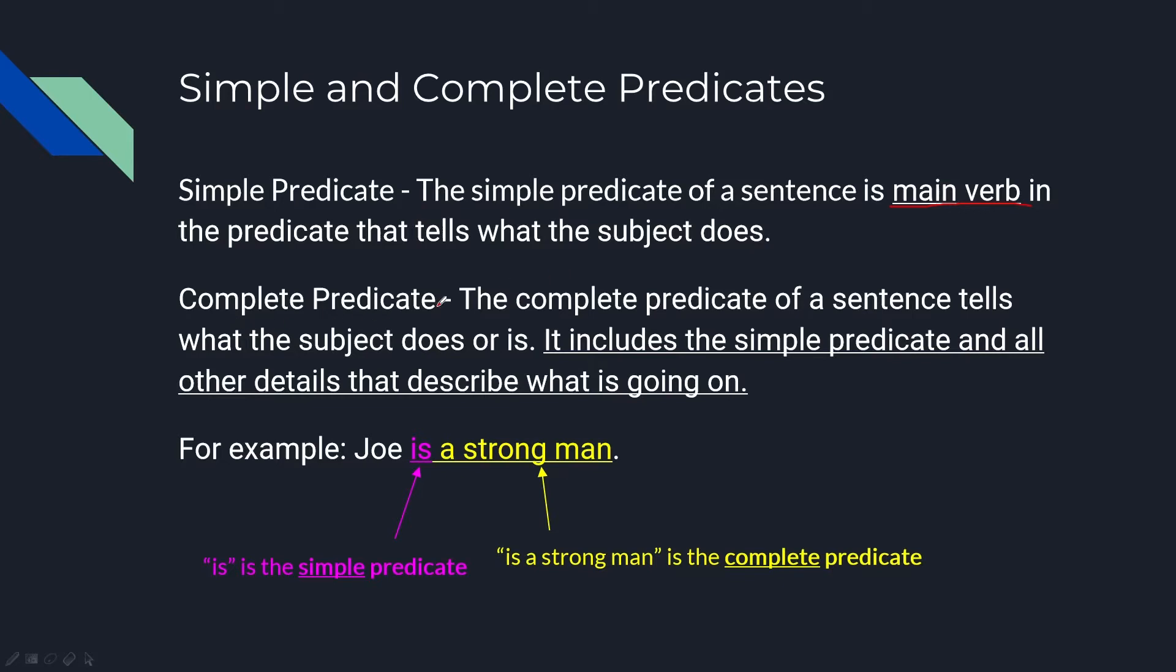Complete predicate: The complete predicate of a sentence tells what the subject does or is. It includes the simple predicate and all other details that describe what is going on. For example, 'Joe is a strong man.' 'Is' is the simple predicate. 'Is a strong man' is the complete predicate.